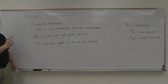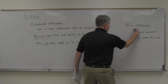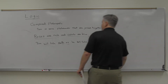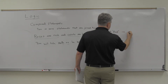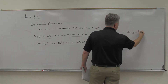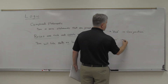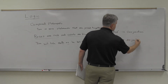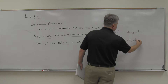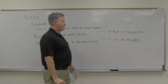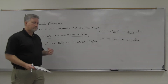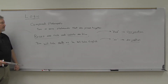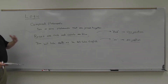A quick note: 'and' statements are known as conjunctions, and 'or' statements are called disjunctions. If you see those words, they just refer to the 'and' or the 'or' statements. Now here's some notation for statements and the 'and' and 'or' connectives.